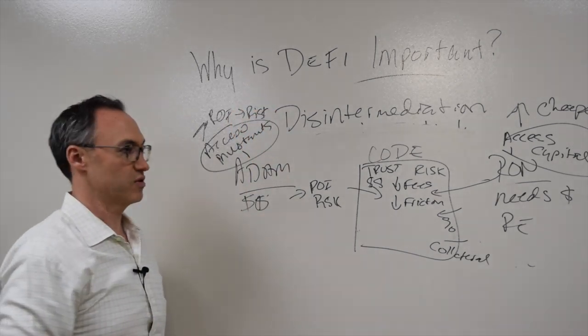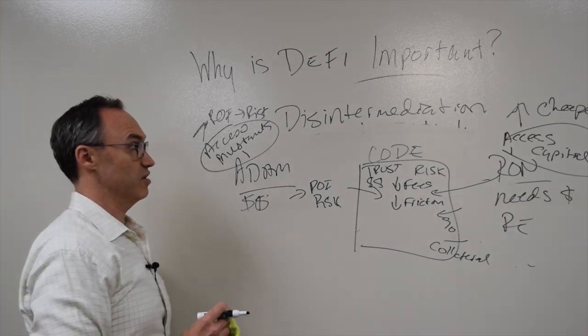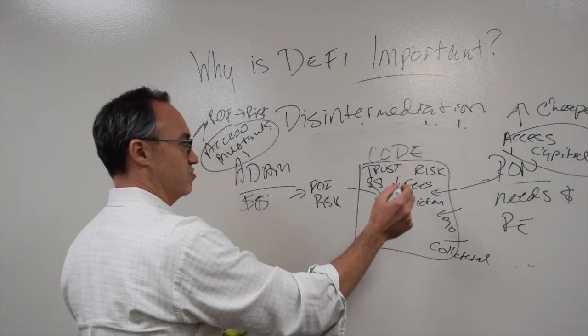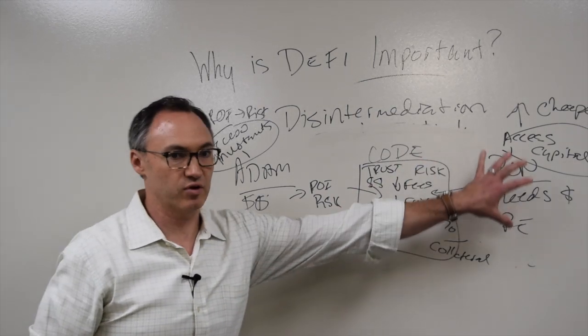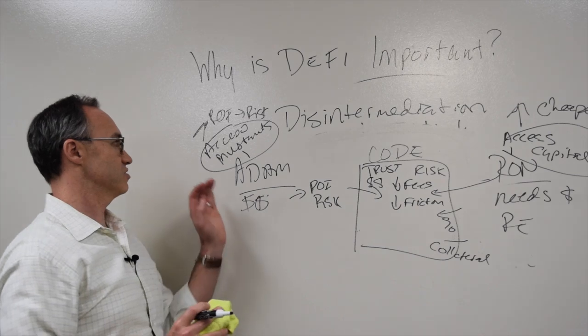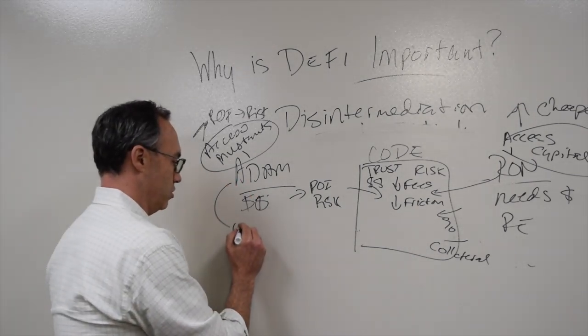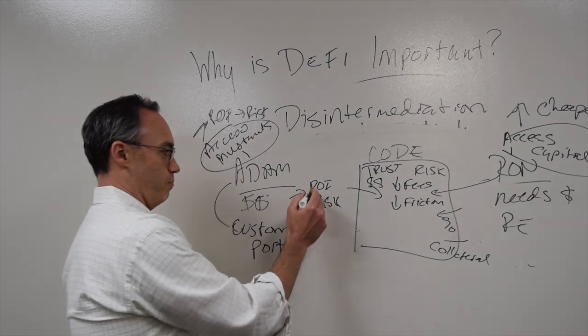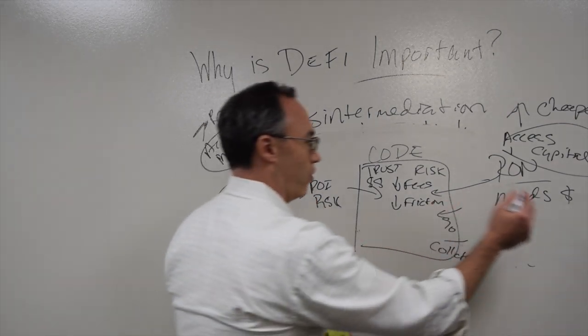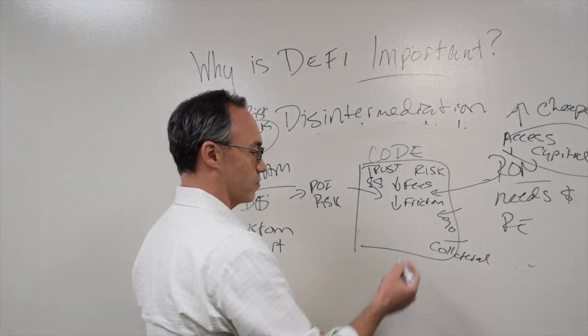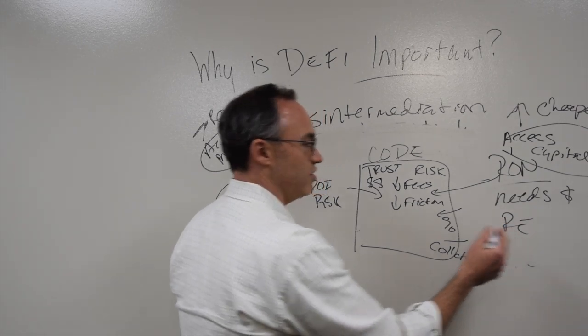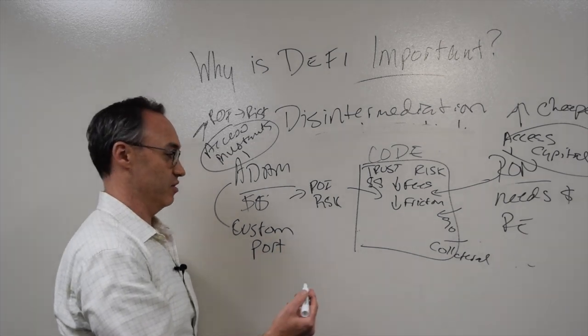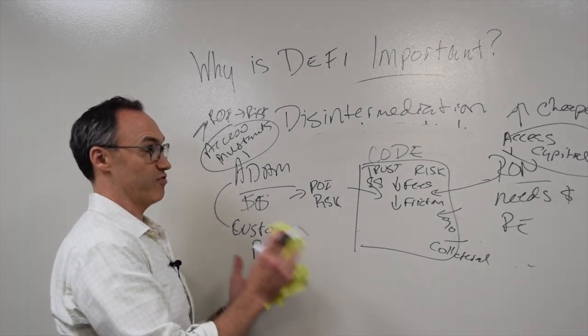So why is decentralized finance important? It's important because partially it's taking out the intermediaries. The disintermediation causes lower fees, lower friction. On one hand it causes an increased access to capital, and on the other hand it causes an increased access to investments. I can create a more custom portfolio that better matches my risk and can give me a better return. Ron can have a better business that gets him more money and creates more opportunities because he doesn't have to spend all of his time trying to find the people that have the money and give them a higher rate of return. It really is potentially better for everyone involved. And this is why it's important.